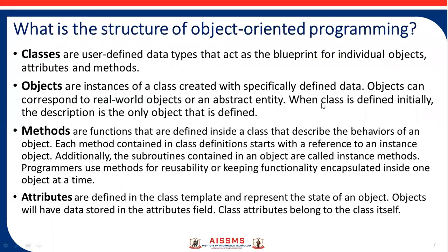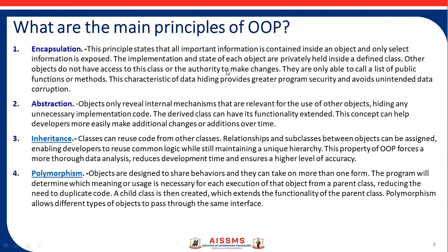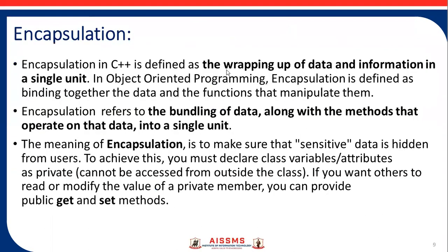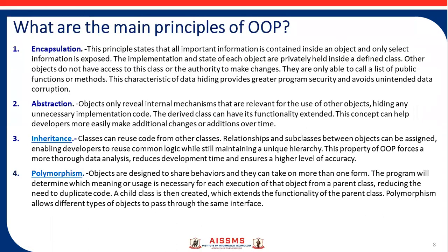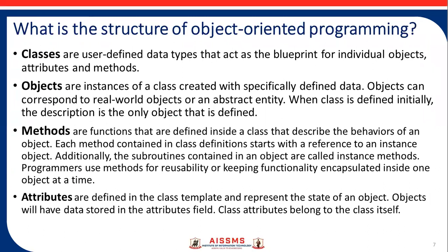Classes are user-defined data types that act as the blueprint for individual object attributes and methods. Objects are nothing but the instance of a class created with specifically defined data. An object can correspond to a real-world object or an abstract entity.